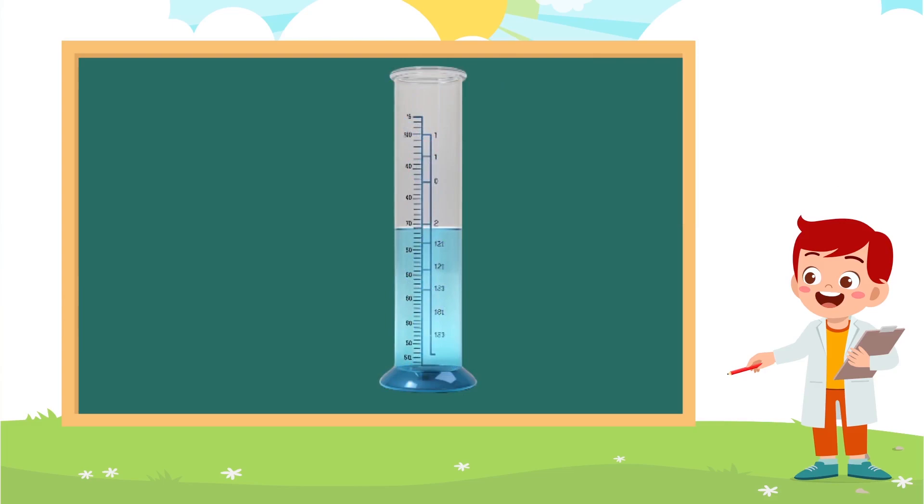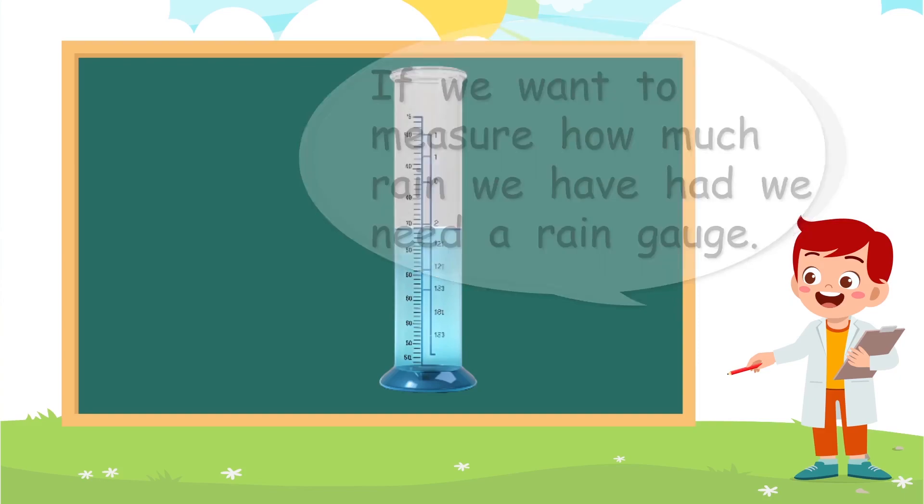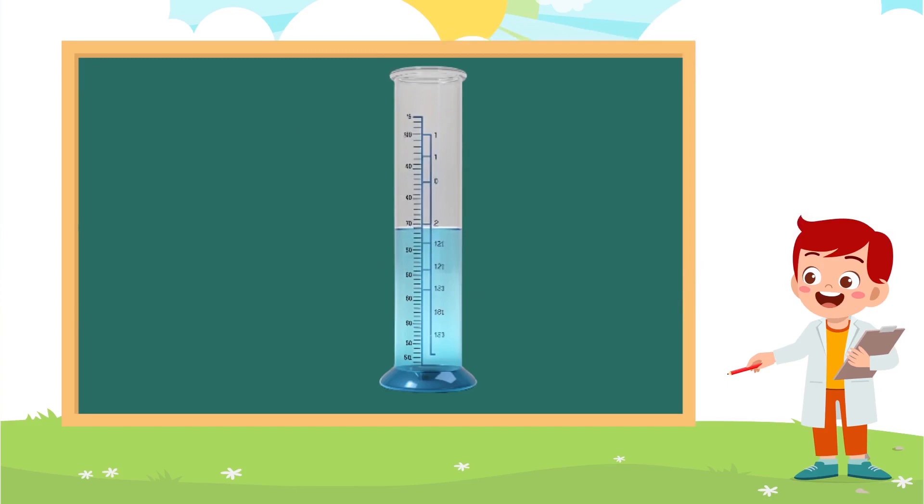OK. Now, this is just a way that we can catch water. It's really just a measuring cylinder. If we want to measure how much rain we have had, we need a rain gauge. A rain gauge. There it is.